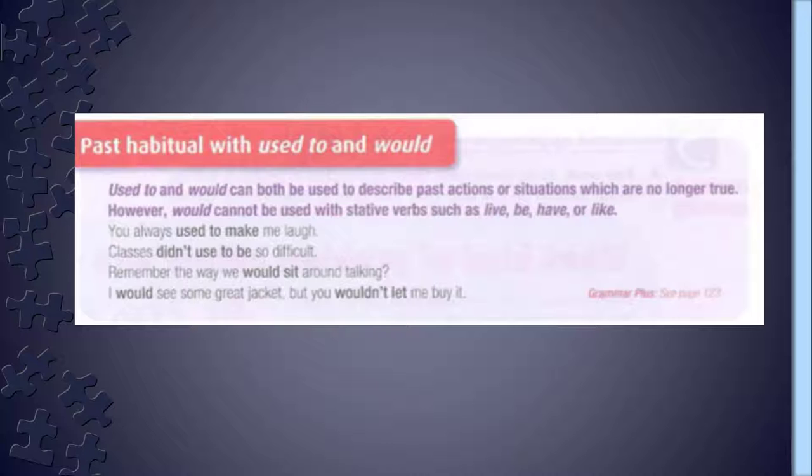Used to and would can both be used to describe past actions or situations which are no longer true. However, would cannot be used with stative verbs such as live, be, have, or like.